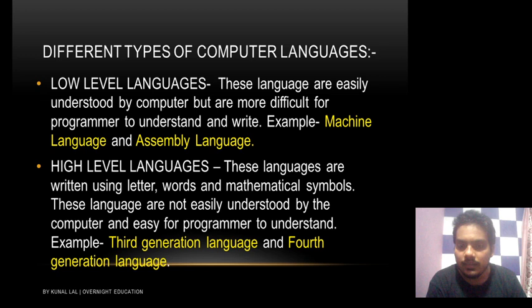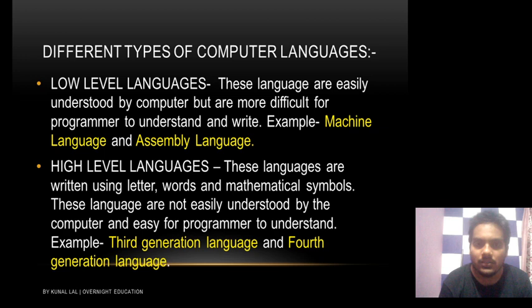High level language is further classified into two types: third generation language and fourth generation language. We will study all these languages — machine language, assembly language, third generation language, and fourth generation language — in detail, one by one.